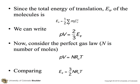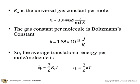And since the total energy of translation of the molecules is 1 half mC squared sum over all of the molecules, we can write that PV is equal to 2 thirds E of the translation. And if we consider the perfect gas law, where n is the number of moles, we know that PV equals nRT, where R is the universal gas constant. And if we compare the two, we get E-translation is equal to 3 halves nRT.